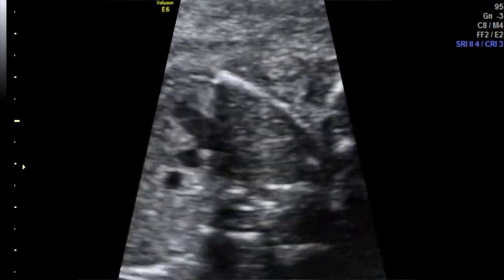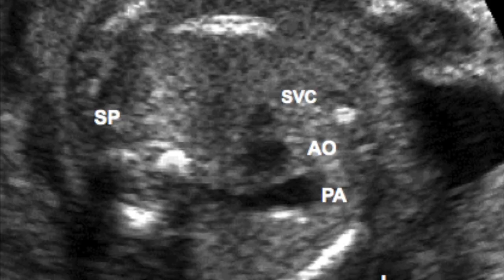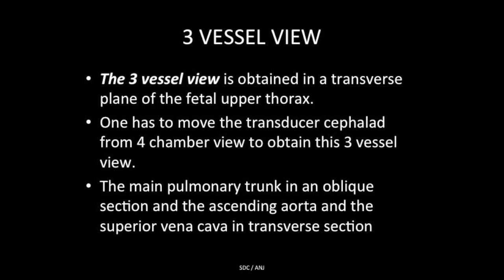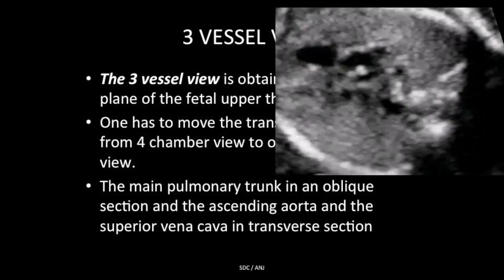In this view, the main pulmonary trunk appears in an oblique section, while the ascending aorta and the superior vena cava are seen in a transverse section. Starting from the upper thorax, with the right side, spine, and left side oriented, moving from right to left: the smaller circle is the SVC, then the aorta which is a relatively bigger circle compared to the SVC, and then a comma-shaped structure which is the pulmonary artery. Moving a little more cranial gives the three vessel trachea view.